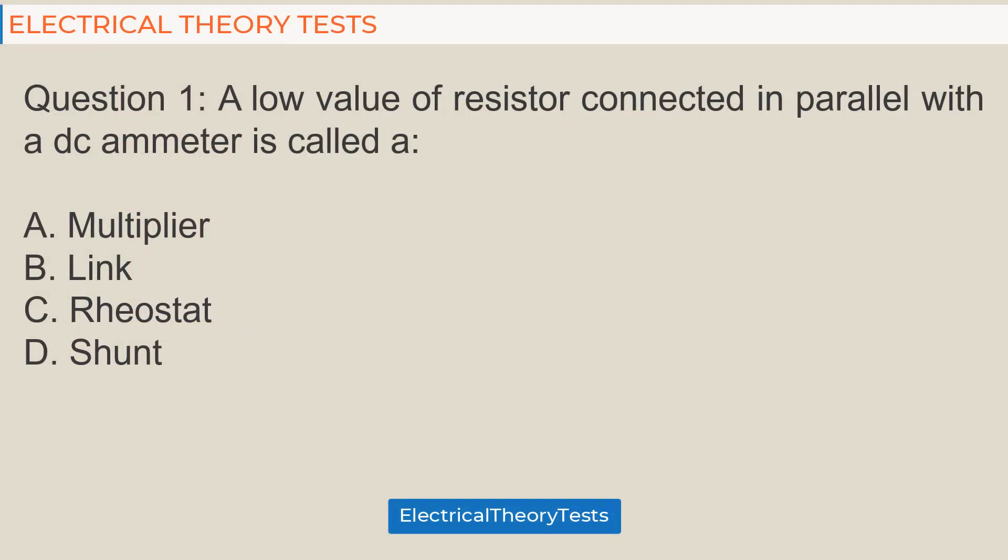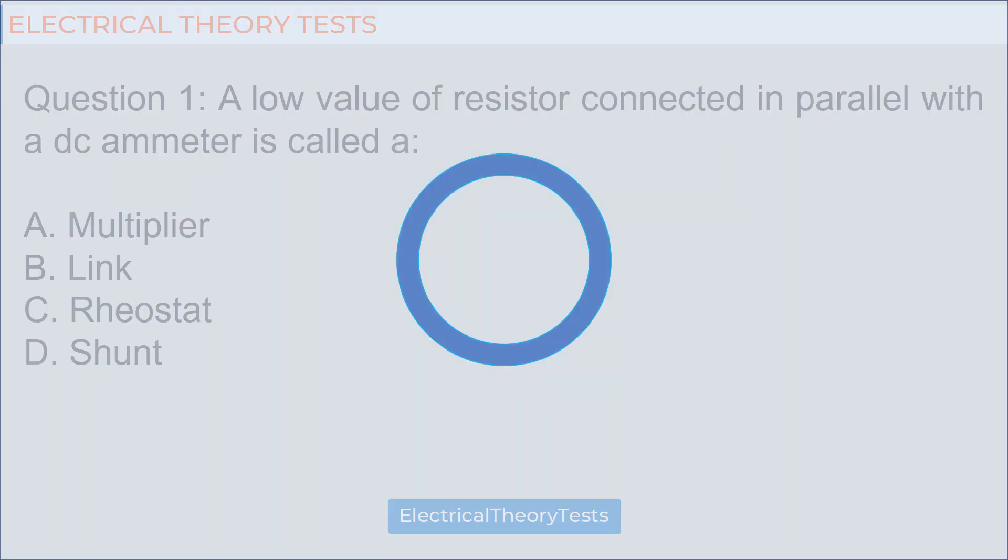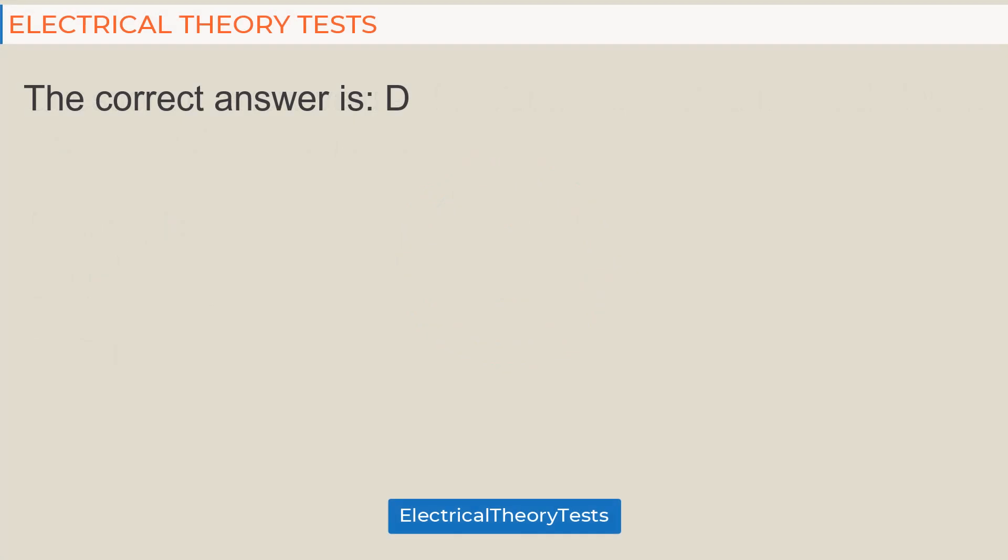Question 1: A low value of resistor connected in parallel with a DC ammeter is called a: A. multiplier, B. link, C. rheostat, D. shunt. The correct answer is D.